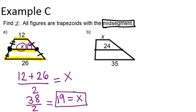Alright, now for part B, we're asked to find one of the base lengths. So x is going to be in a different part of our equation. 24 is the length of the mid-segment, which means that 24 is the average of x and 35. So x plus 35 divided by 2 has to equal 24.